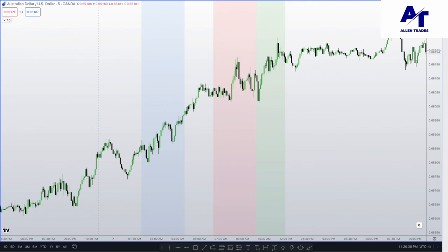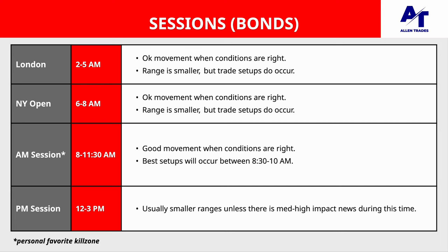Moving on to bonds, the first kill zone is London Open at 2 to 5 AM. There's okay movement when the conditions are right but typically the range is smaller, though trade setups do occur — so scalpers can trade London Open for bonds. Moving on to New York Open, there's okay movement when the conditions are right, similar to London, and the range is usually a little smaller compared to the rest of the day, though scalpers can find trade setups. The best session of the day for bonds is the AM session, from 8 to 11:30 AM.